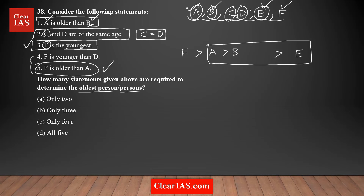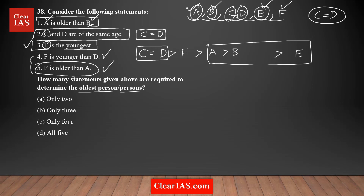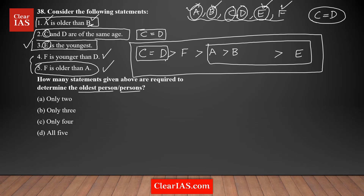C and D's ages are equal but we don't know where they fit. Using statement 4: F is younger than D, meaning D is older than F. Combined with C and D being the same age, we can now establish the full relationship among all six people. D and C are the oldest.